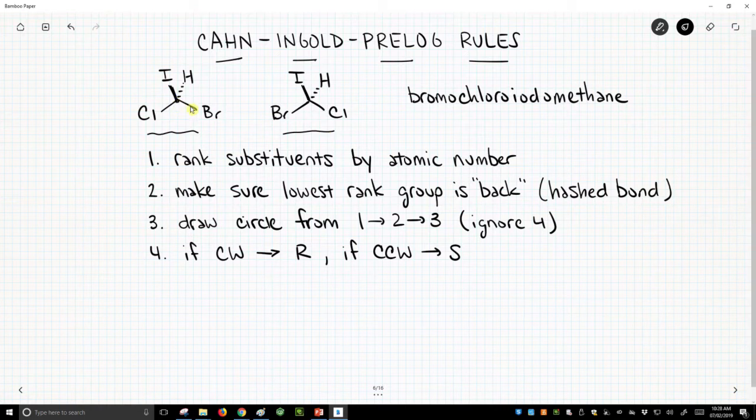Both of these carbons, they have four different substituents: chlorine, bromine, iodine, and hydrogen. These are chiral carbons, and we've drawn different forms of the same molecule. They're actually mirror images of each other. If they were to look into the mirror, they would see the other molecule. These are not identical.